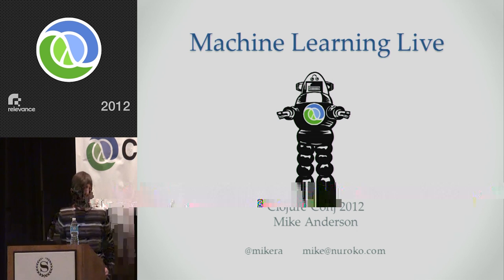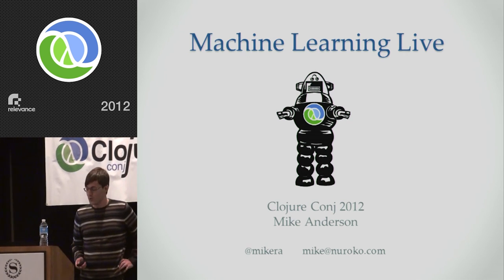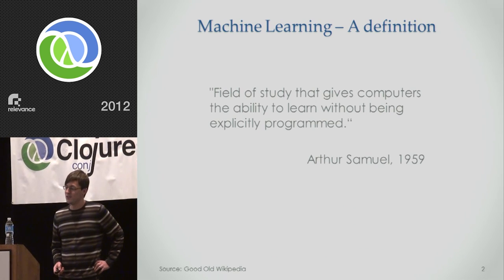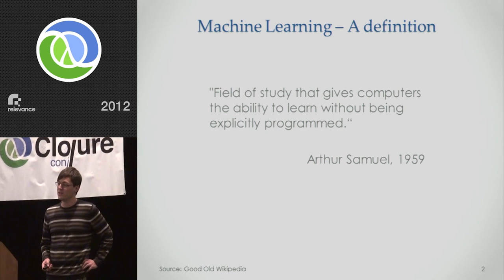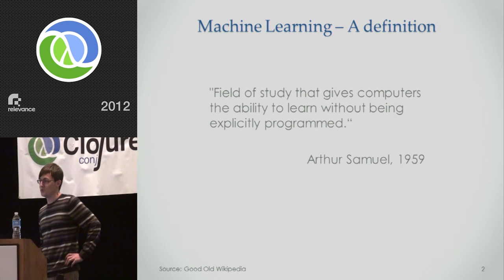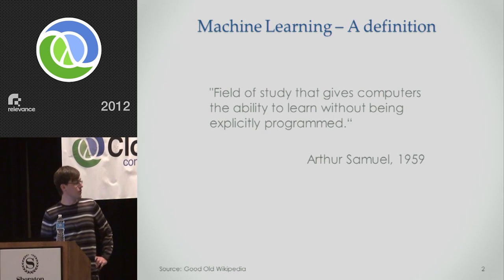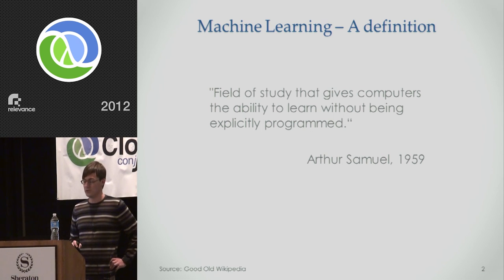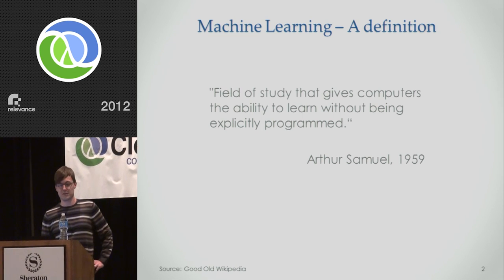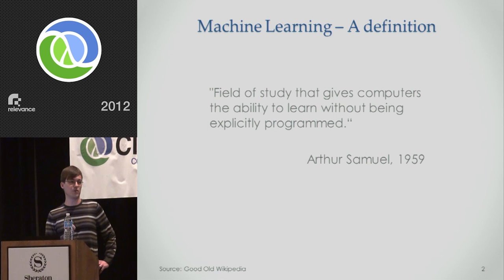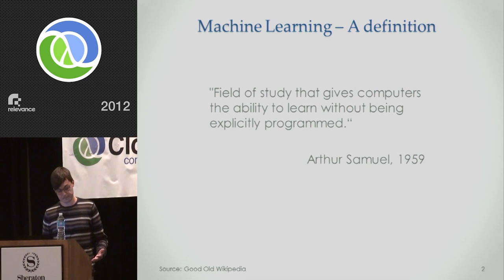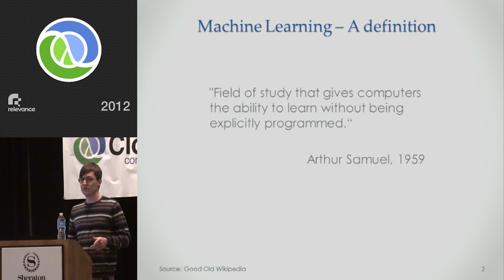So I think it's always good to start with a definition. So I naturally went to Wikipedia. Machine learning is the field of study that gives computers the ability to learn without being explicitly programmed. Now, the quote's over 50 years old, but I think it's actually still a pretty good definition. It captures the most important point. What we're interested in is getting our computers to learn to do useful things without you having to explicitly tell them every single task. Because in large, complex data, that rapidly becomes impossible.